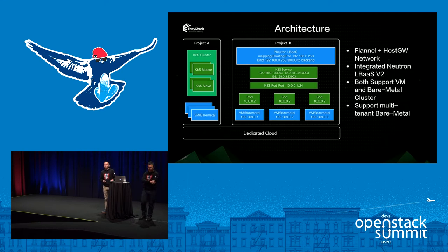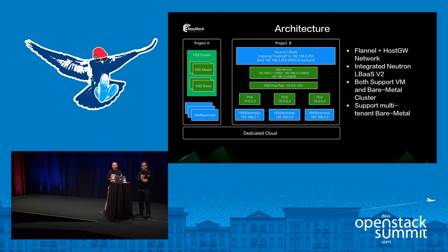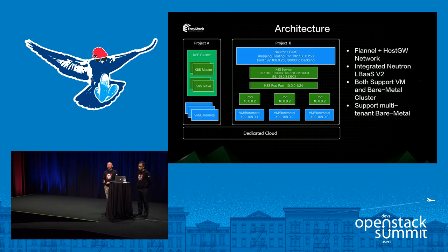Good afternoon, everyone. I'm Ho Ming from EasyStack. As my colleague Chen said, I will introduce our new container service features in ESCAST 3.0, and demo one platform for VMs, containers, and bare metals. As shown in the architecture picture, we built our container service based on community Magnum, Kubernetes, and open source container solutions. On top of that, we have done more to make the container service production ready. Next I will demo how our one platform manages bare metal and container services.